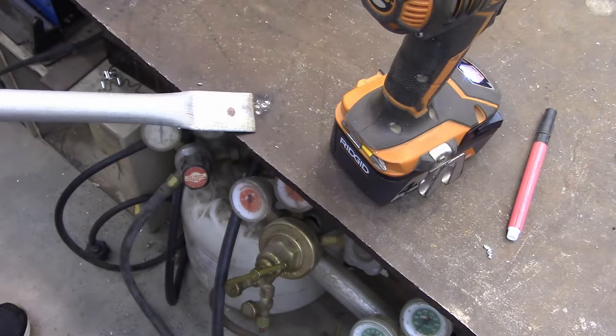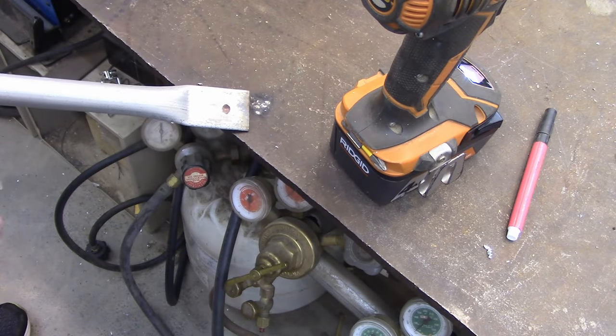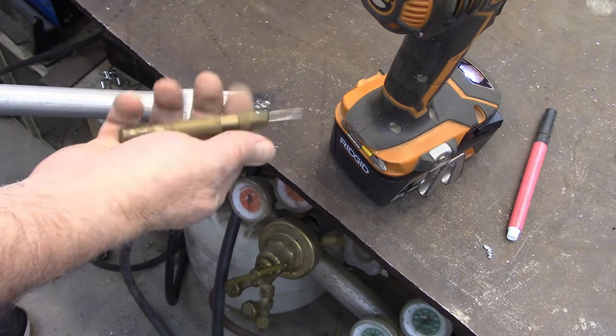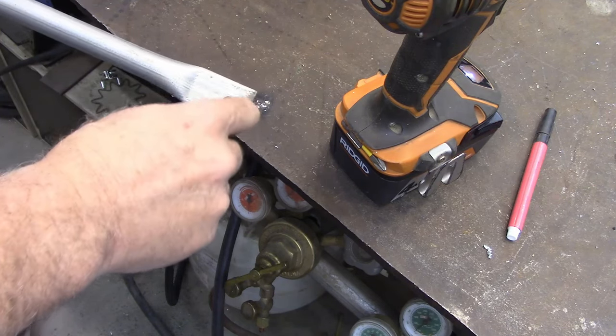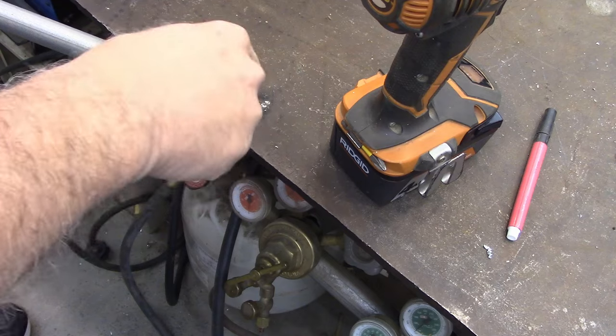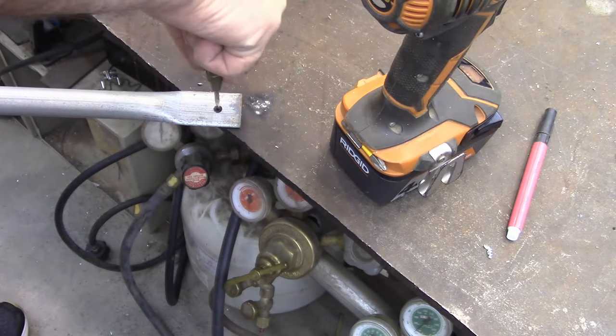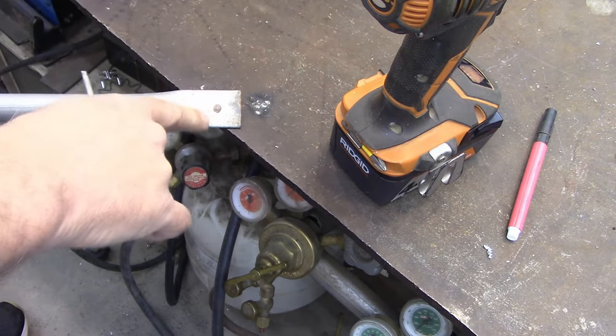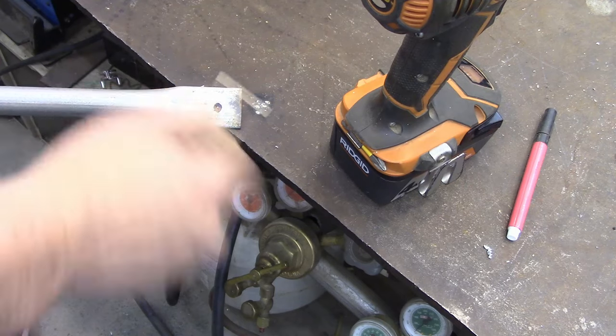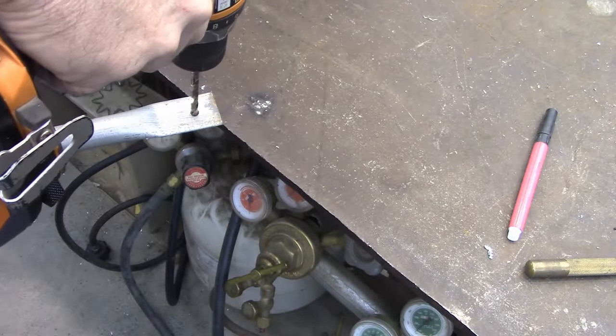The way you can get this started pretty much every time is really simple: get an automatic center punch like this. I'll link one in the description. Pick the center of your hole just by eye, push down, and it punches a little dent right there.